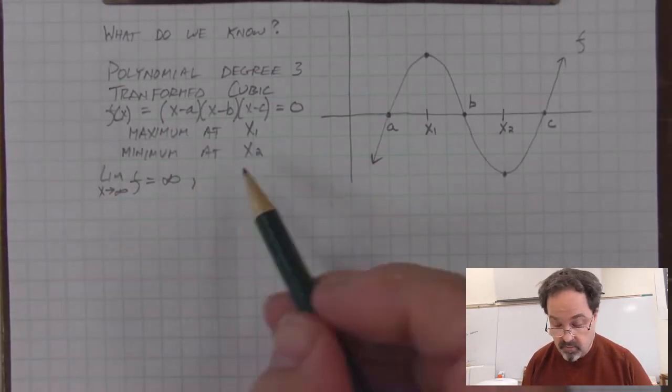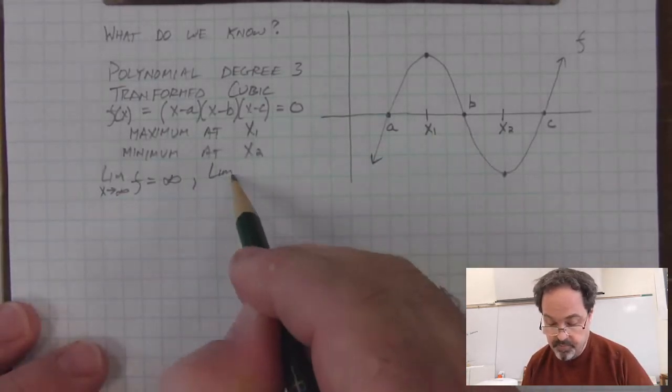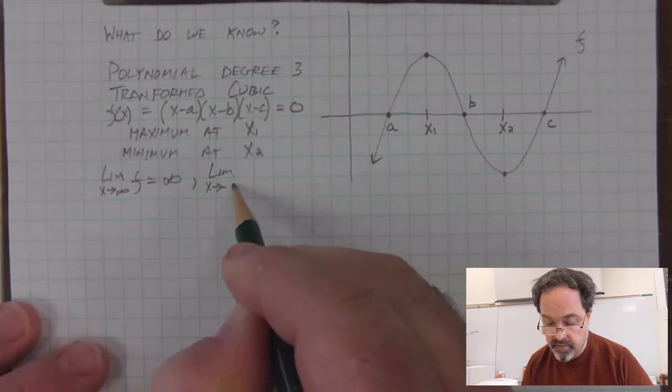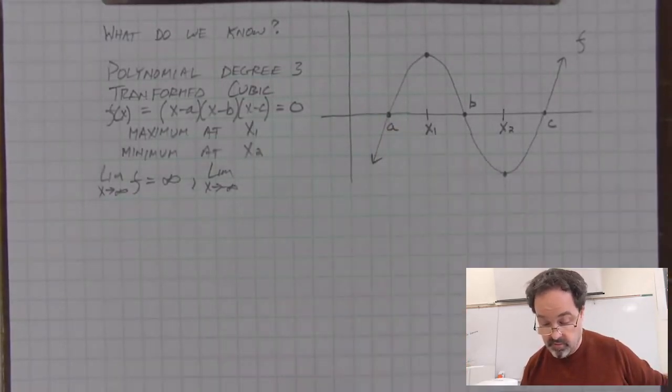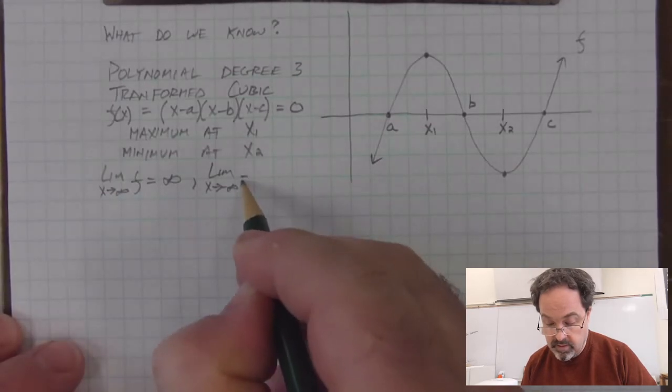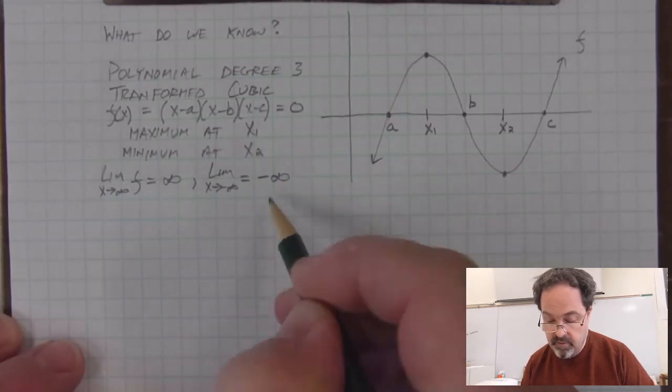The other end, the limit as x approaches negative infinity, imagining that we could see the graph as it continues down, is negative infinity.